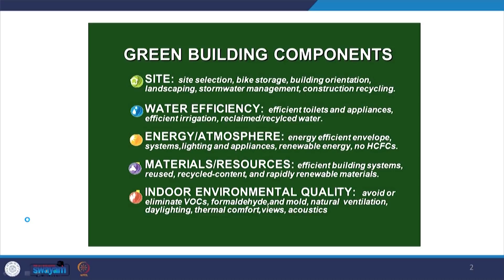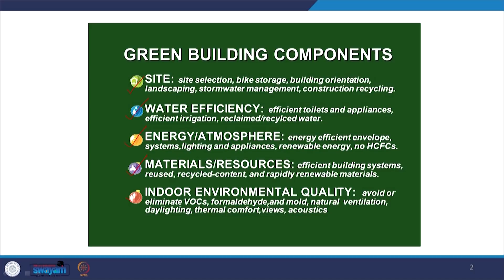To give you an overview, green buildings usually comprise of components which can be clubbed under one of these features. These five components are invariably present in green buildings: the first being the site, second is water efficiency, third is energy and atmosphere, fourth is materials and resources, and the last one being indoor environment quality.